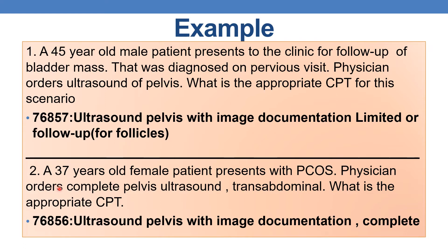Let us discuss one more example. A 37-year-old female patient presents with PCOS — polycystic ovarian syndrome. The physician orders a complete pelvic ultrasound transabdominal. The appropriate CPT code is 76856 — ultrasound pelvic with image documentation, complete. By this, we complete the codes of ultrasound pelvic non-obstetrical.